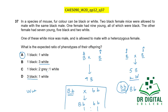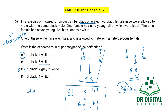Gray offspring cannot appear since only black and white fur colors exist in this species, ruling out co-dominance. Three white cannot occur because white is recessive. The cross of white male (bb) with heterozygous female (Bb) gives a 1 black to 1 white ratio. The answer is A: one black to one white.